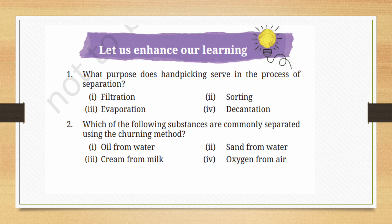What purpose does handpicking serve in the process of separation? Options are: filtration, sorting, evaporation, decantation. The correct answer is sorting. Which of the following substances are commonly separated using the churning method?